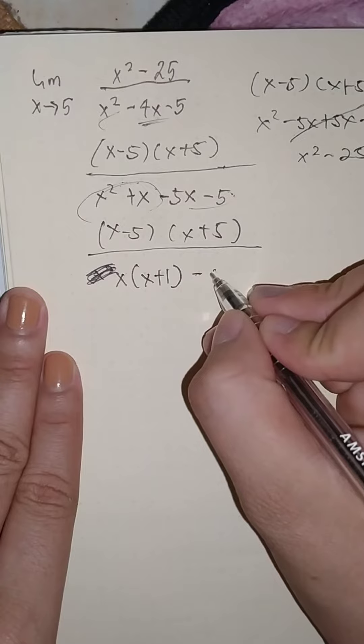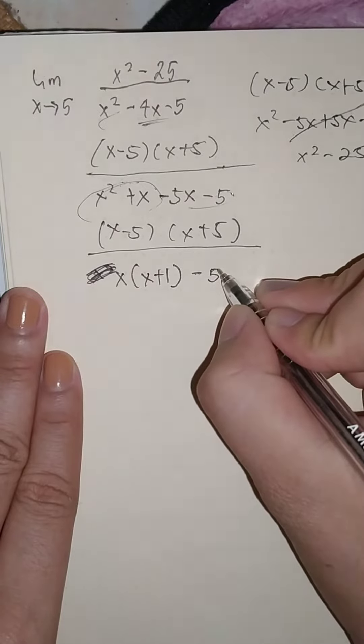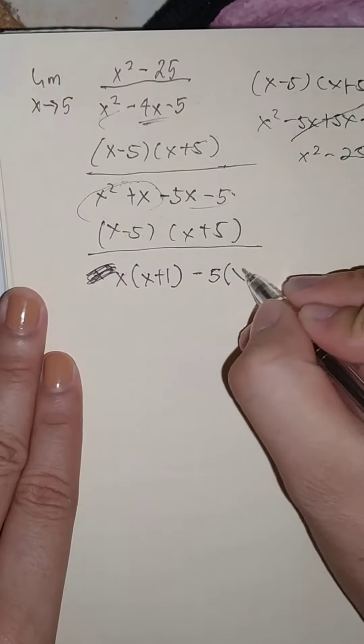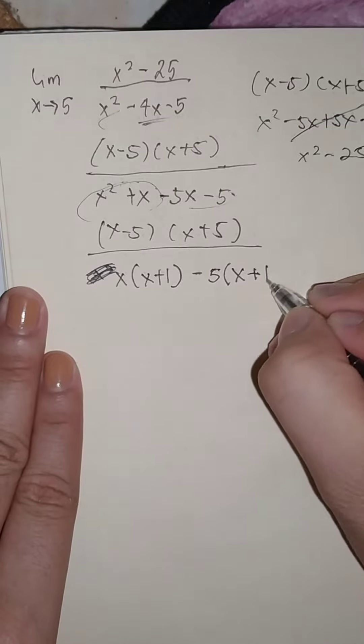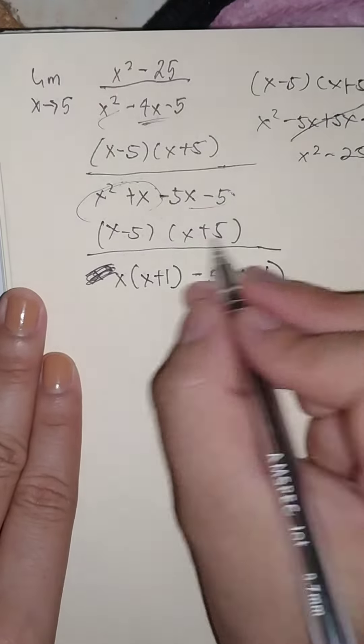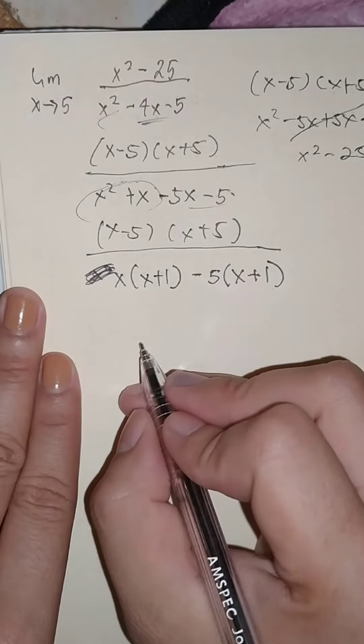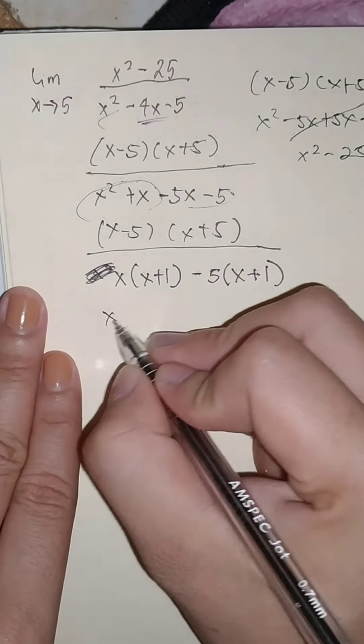x plus 1. Yeah, we have x plus 1 here, x minus 5. Okay, so we have x minus 5, x plus 5.